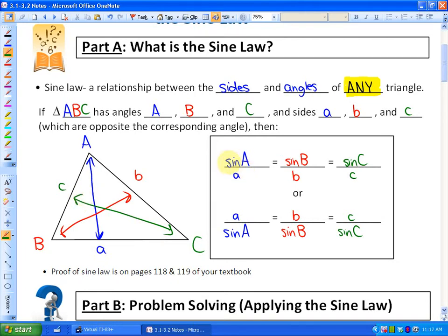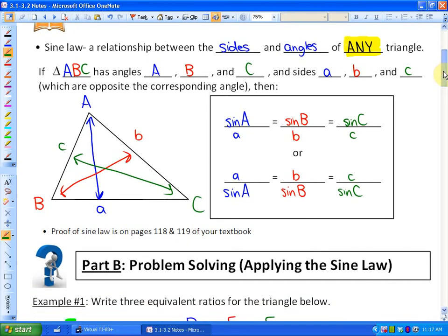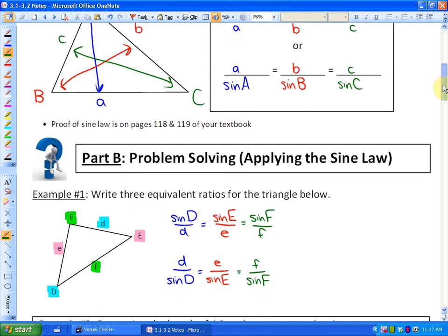If that's true, then the sine law states that sin A over a equals sin B over b equals sin C over c. Or if I take the reciprocal of all of those, it would be a over sin A equals b over sin B equals c over sin C. But more importantly, we want to know how it applies. So let's head into problem solving.